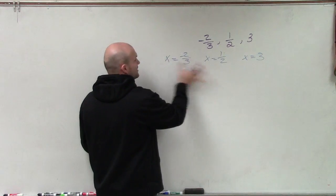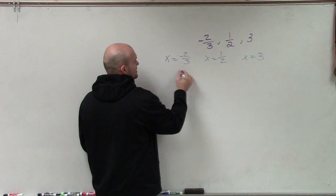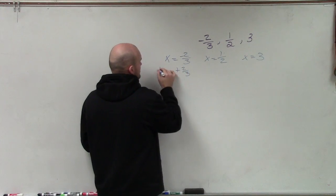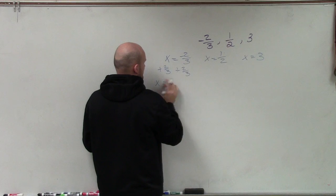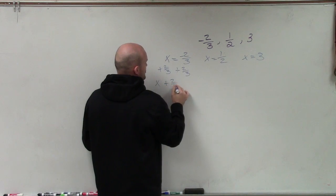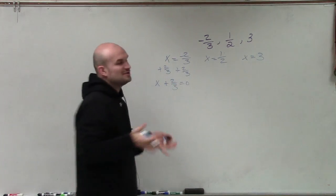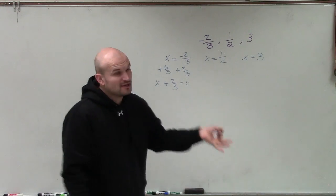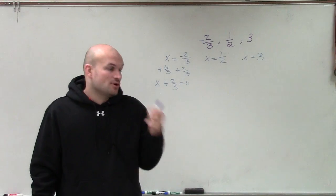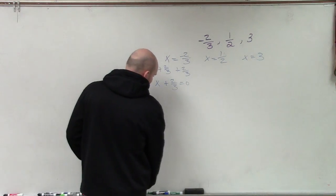Now, once we set them equal to x, then we set them equal to 0. So I'd add 2/3 to both sides. But then I have x plus 2/3 equals 0. And then if I'm going to use that as my factor to multiply by my other factors, I'm going to have fractions as those coefficients. So I look for a different way to do this.